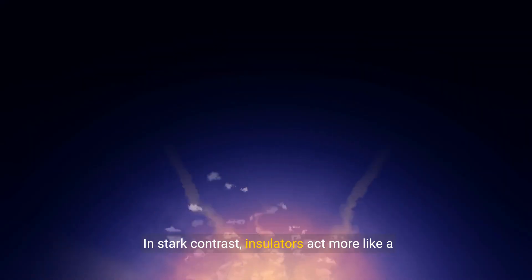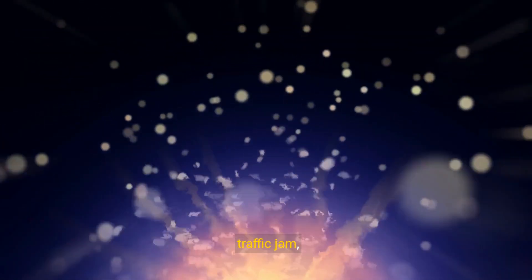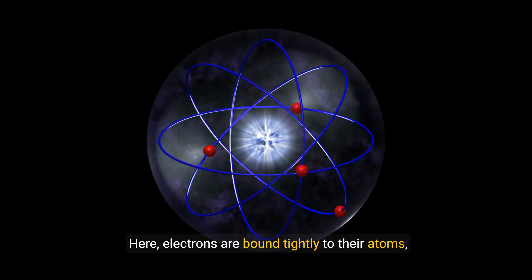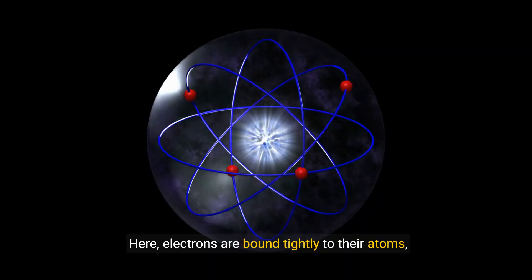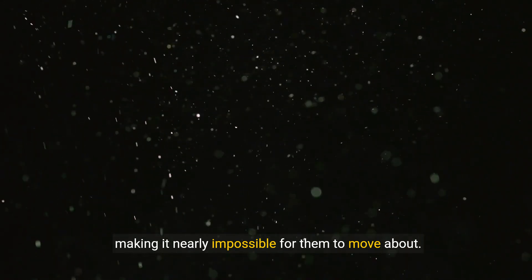In stark contrast, insulators act more like a traffic jam, restricting electron movement and preventing electrical flow. Here, electrons are bound tightly to their atoms, making it nearly impossible for them to move about.